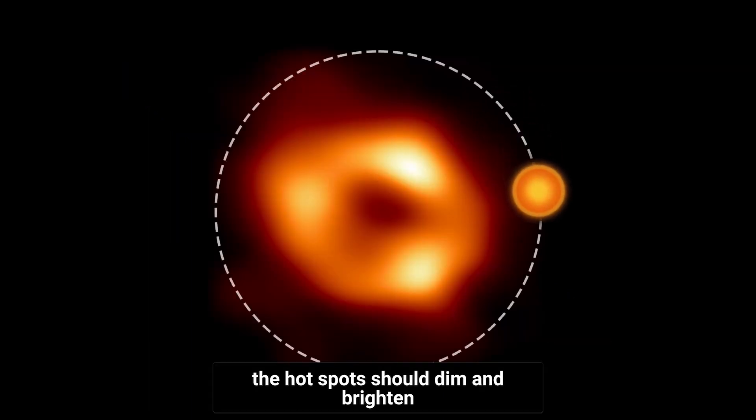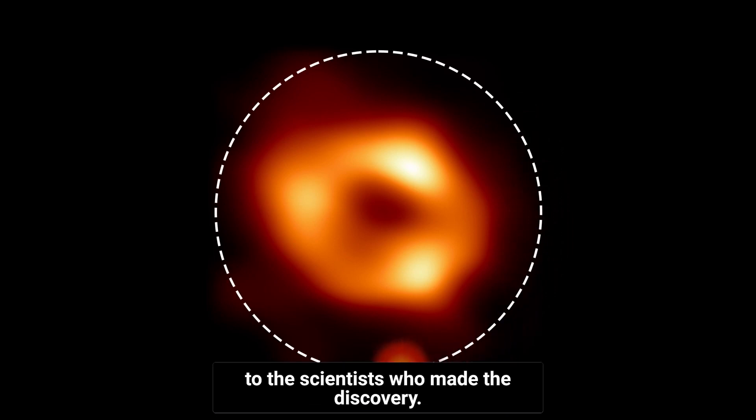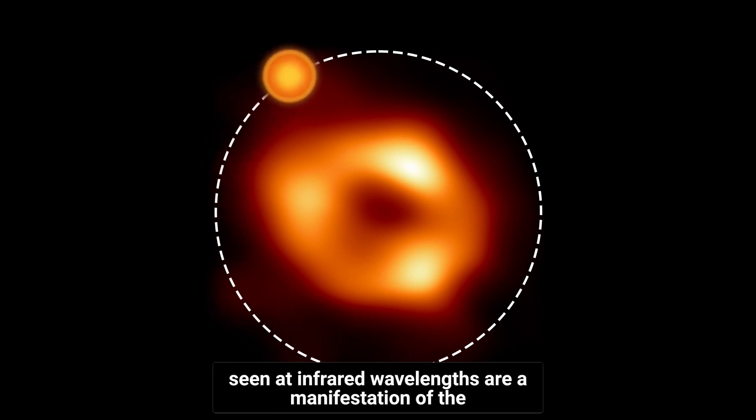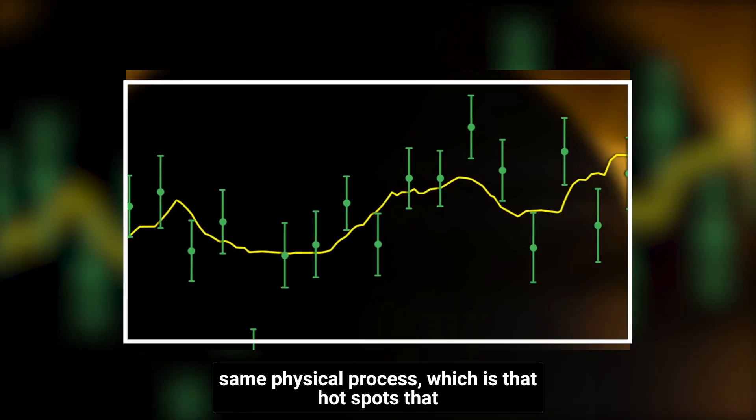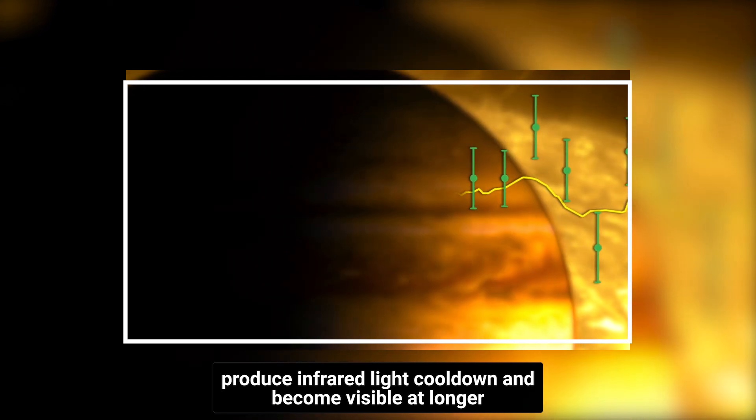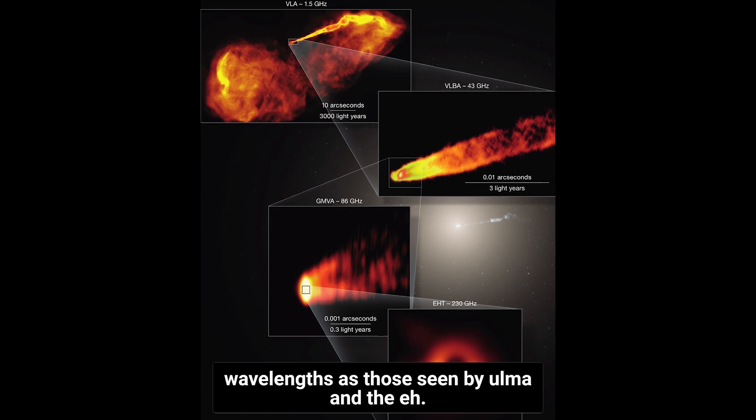The hot spot should dim and brighten as it orbits the black hole, according to the scientists who made the discovery, as seen in this animation. Perhaps the hot spots seen at infrared wavelengths are a manifestation of the same physical process, which is that hot spots that produce infrared light cool down and become visible at longer wavelengths, as those seen by ALMA and the EHT.